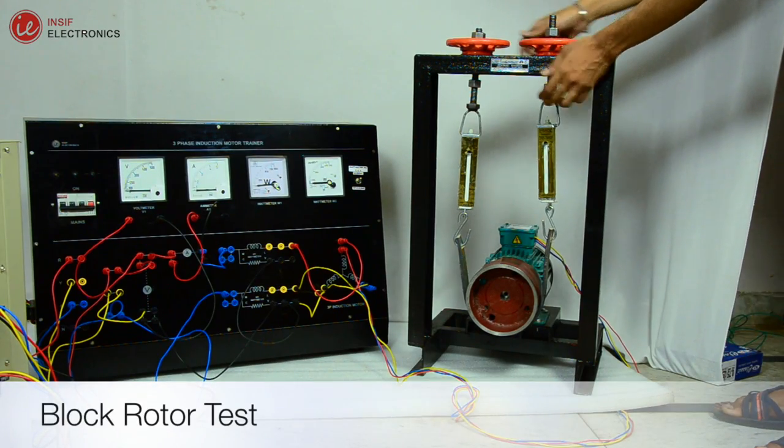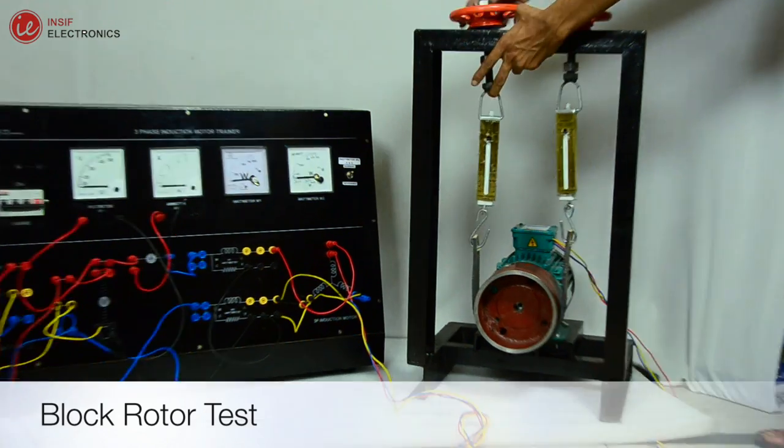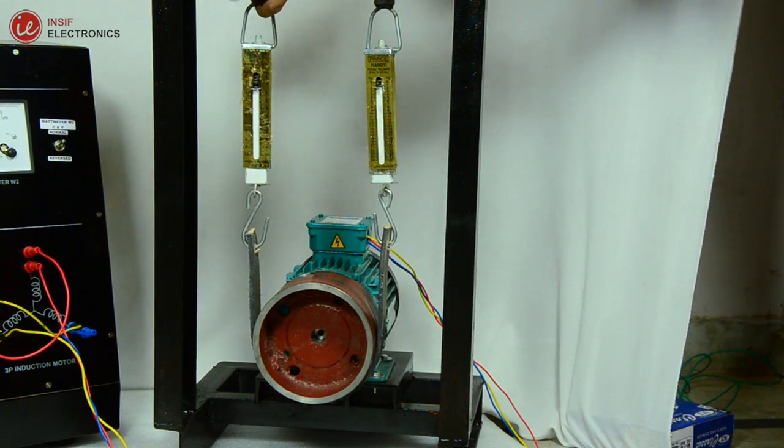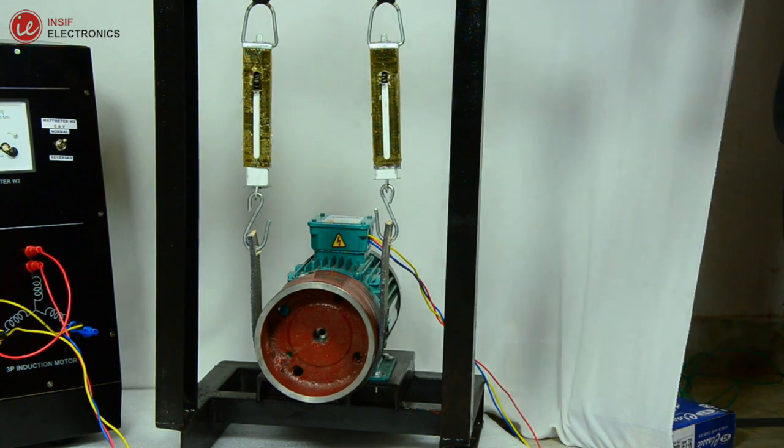Now let's perform the block rotor test. Make sure the variac should be at minimum position and apply full load on the motor by rotating the handles.